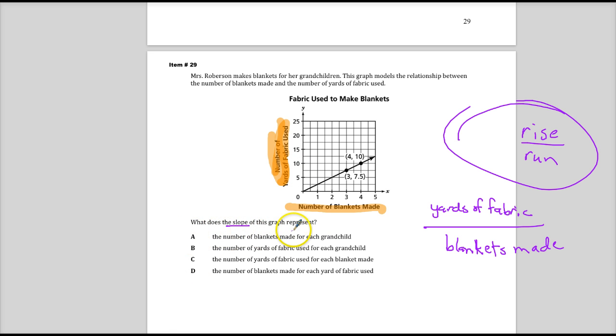So A says the number of blankets made for each grandchild. No, grandchildren aren't in this, so it's not this one. The number of yards of fabric used for each grandchild. Nope. It doesn't say the word grandchild anywhere. It says blankets made. So the relationship is between fabric and blankets, not grandchildren. The number of yards of fabric used for each blanket made. That's looking good. The number of yards of fabric used for, so fabric for blankets. There we go.